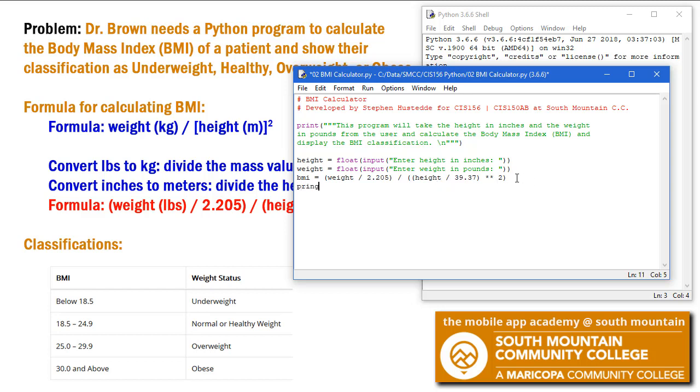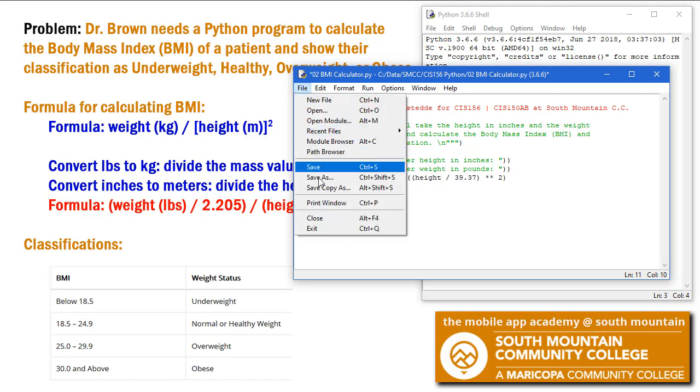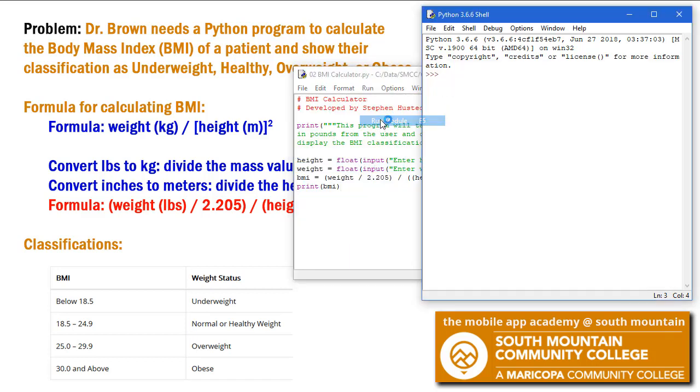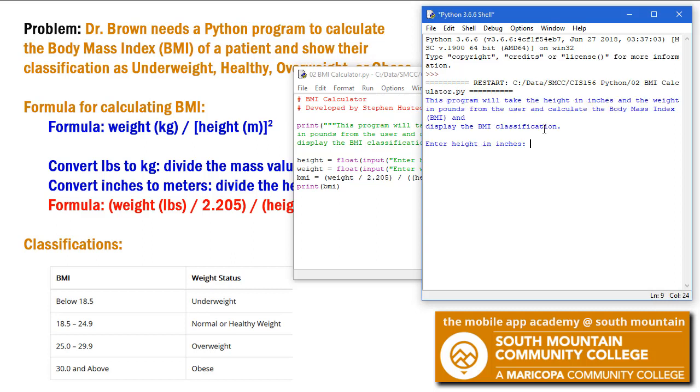Now let's just print the BMI and we can check it at this point. I'm going to save my document. And I'm going to run 72 inches in height. We'll say 6 feet.